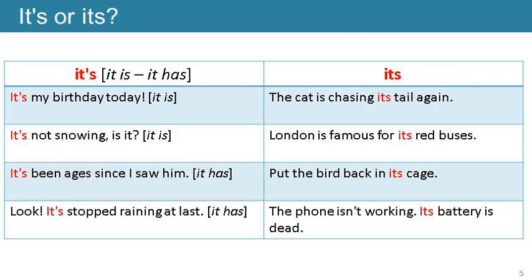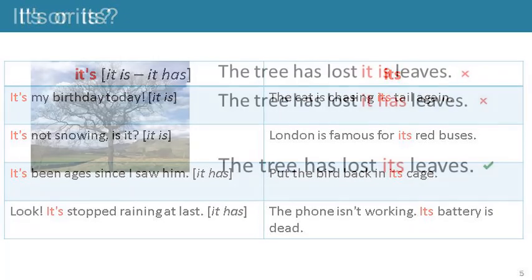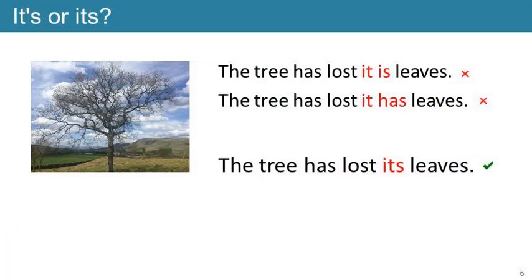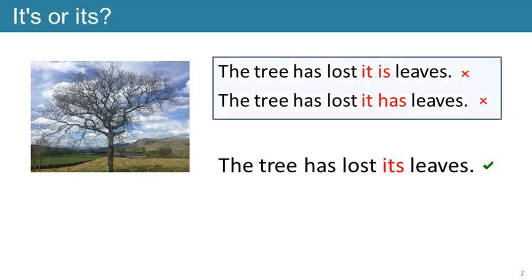This table has sentences exemplifying the difference between the contraction 'it's' on the left, which needs an apostrophe, and the possessive pronoun 'its' on the right, which doesn't. A good way to decide if you need the apostrophe is to see whether the sentence makes sense if the word 'its' is expanded. Since 'the tree has lost it is leaves' is not possible, the version without the apostrophe is correct.